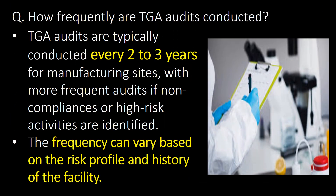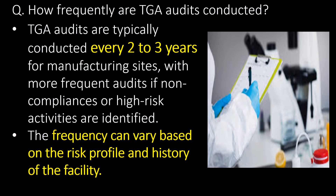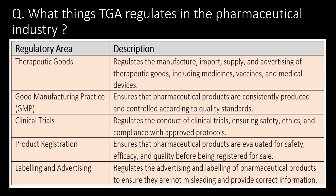How frequently are TGA audits conducted? TGA audits are typically conducted every two to three years for manufacturing sites, with more frequent audits if non-compliance or high-risk activities are identified. The frequency can vary based on the risk profile and history of the facility.